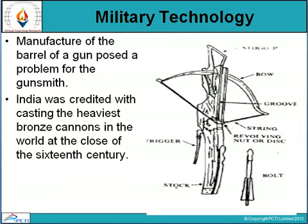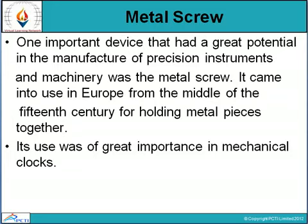Metal screws are another important device. The metal screw had great potential in the manufacture of precision instruments and machinery. It came into use in Europe from the middle of the 15th century for holding metal pieces together. Multiple metal pieces were combined to create an important device with very high capacity and potential, and this tool was used in the manufacture of all kinds of instruments and machinery. The metal screw played a very important role in the mechanical clock.